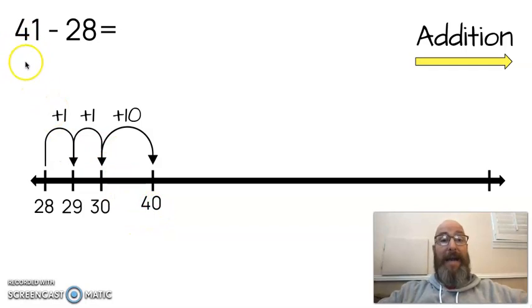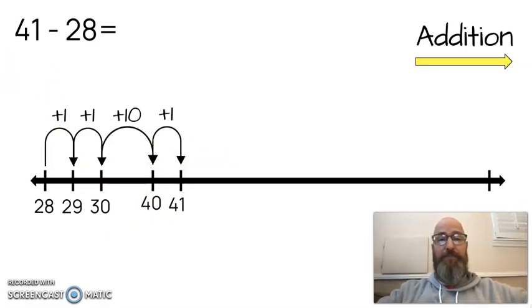Now, I'm not done yet. I have to get to 41. Can I add another 10? No, I can't. If I add another 10, I get to 50. That's too big. I want to stop at 41. So I'm going to go back and start adding by ones again. I'm going to add 1. I get 41.